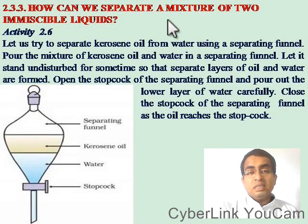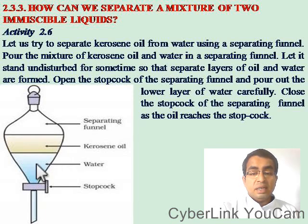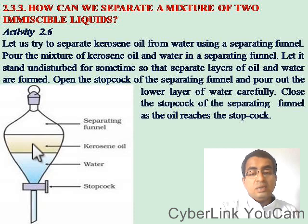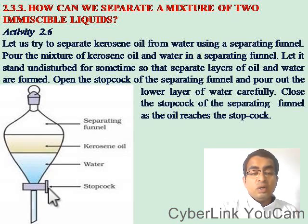Third, how can we separate a mixture of two immiscible liquids? Let us try to separate kerosene oil from water using a separating funnel. Pour the mixture of kerosene oil and water in a separating funnel. Water settles to the lower portion and kerosene to the top. Let it stand undisturbed for some time so that separate layers of oil and water are formed. Open the stop cork and pour out the lower layer of water carefully, then close the stop cork as the oil reaches it.